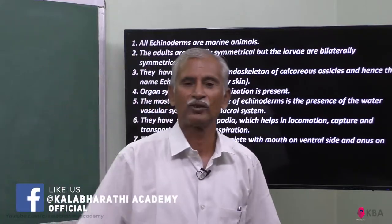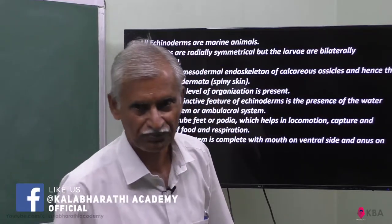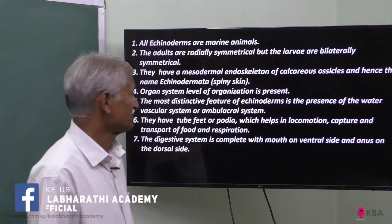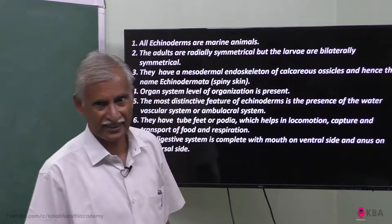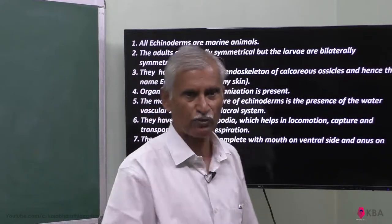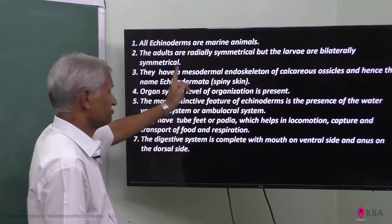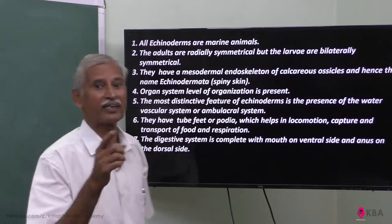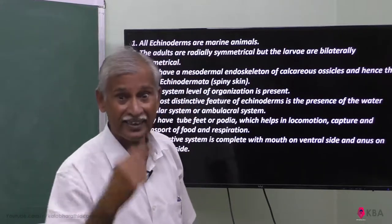Starfish, for example, is radially symmetrical. They are bilaterally symmetrical at the larval stage, but at the adult level stage it becomes radially symmetrical.